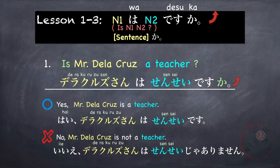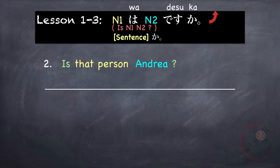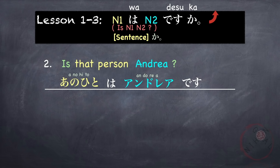Let's look at another example: 'Is that person Andrea?' First, let's use N1 wa in this pattern. That person is Andrea — ano hito is 'that person.' Ano hito wa Andrea desu. That person is Andrea. Or you can say Andrea san — Miss Andrea. Ano hito wa Andrea desu ka? Is that person Andrea? Again with a rising intonation.